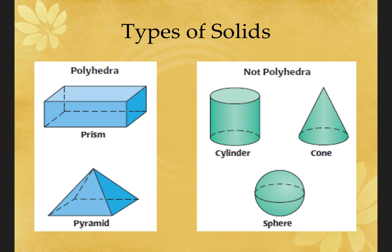There are two types of solids: polyhedra and non-polyhedra. Polyhedrons include prisms and pyramids — anything where the faces are triangles, rectangles, squares, or hexagons. Non-polyhedrons have curved edges. A cylinder, a cone, and a sphere are still solids, and we'll work with them in the future. But they are not polyhedrons because they have curves. If there's any rounded part to your figure, it is not a polyhedron.